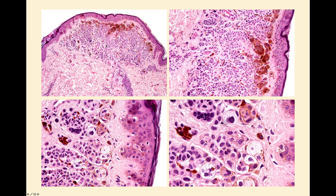It doesn't really matter to me whether there's 5%, 10%, or 90% — I just call them balloon cell nevi and leave it at that. This one is actually rather interesting because on high power you can see the balloon cells have rather granular cytoplasm with stippling of melanin pigment. But in some cells you can see that it's multivacuolar — very bubbly with vacuoles indenting the nucleus. You can see how easy it might be to think of it as a sebocyte, and if the whole lesion was composed of these cells, you might mistakenly diagnose sebaceous carcinoma.